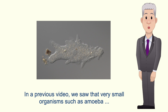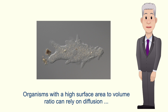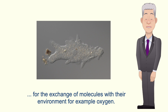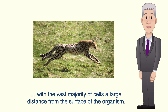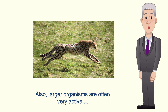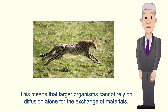In a previous video we saw that very small organisms such as amoeba have a very high surface area to volume ratio. Organisms with a high surface area to volume ratio can rely on diffusion for the exchange of molecules with their environment, for example oxygen. However, larger organisms have a much lower surface area to volume ratio, with the vast majority of cells a large distance from the surface of the organism. Also, larger organisms are often very active and have a high demand for oxygen for aerobic respiration. This means that larger organisms cannot rely on diffusion alone for the exchange of materials.